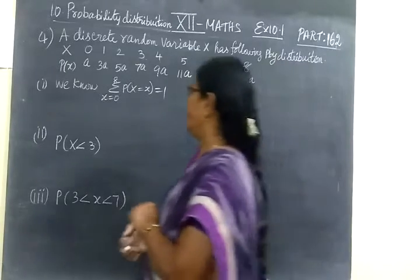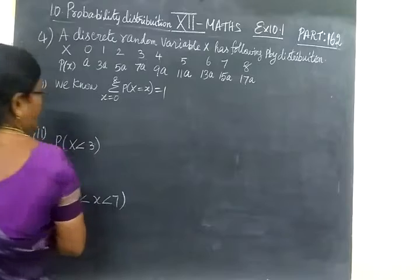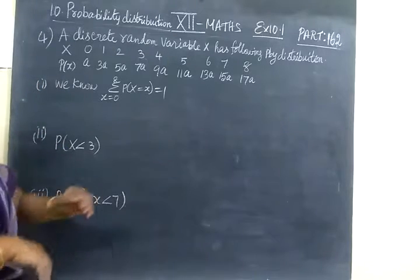X values 0 to 8 and P of X equal to A. We know sum of the probability is equal to 1.